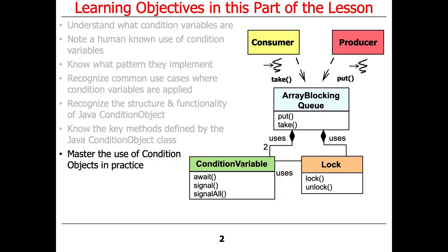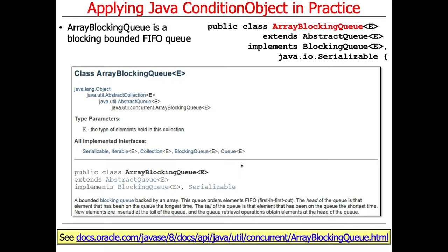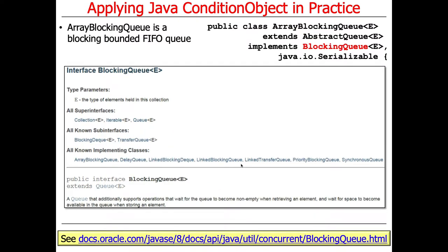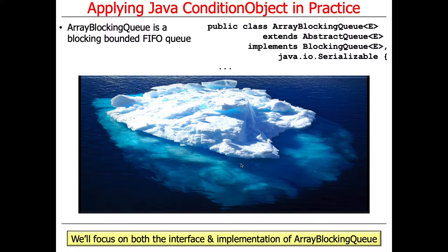This is a fairly involved discussion, so we'll look at it from a couple different points of view, and we'll be focusing on the ArrayBlockingQueue. As you probably recall from last week, ArrayBlockingQueue is a blocking, bounded FIFO queue implemented by an array. It extends the AbstractQueue superclass, implements the BlockingQueue interface, and has methods take and put, among other things. We're going to focus on both the interface and the implementation.